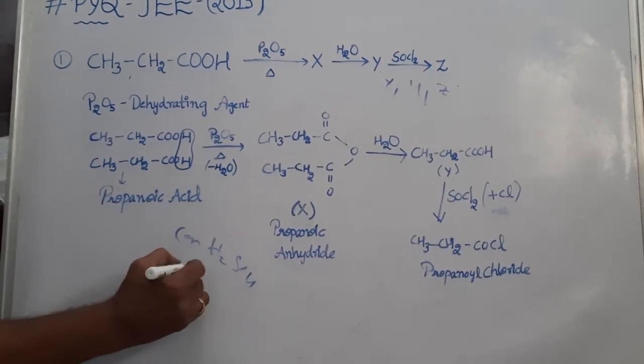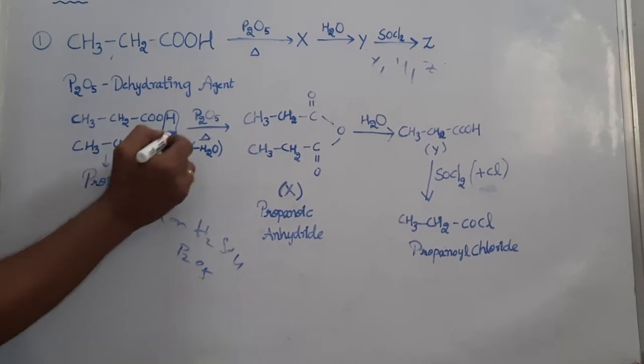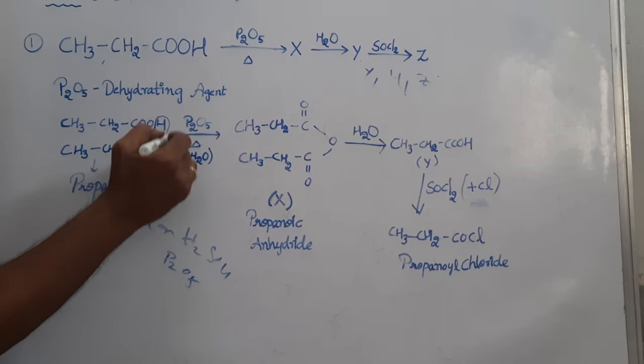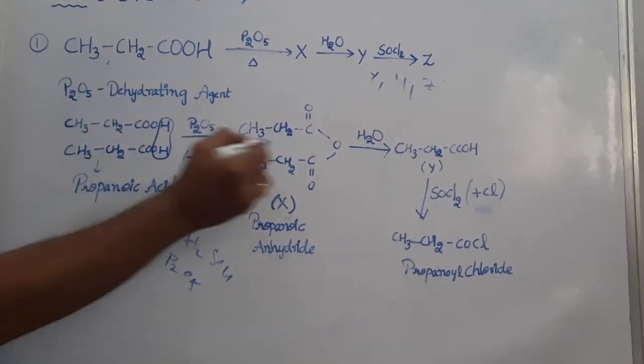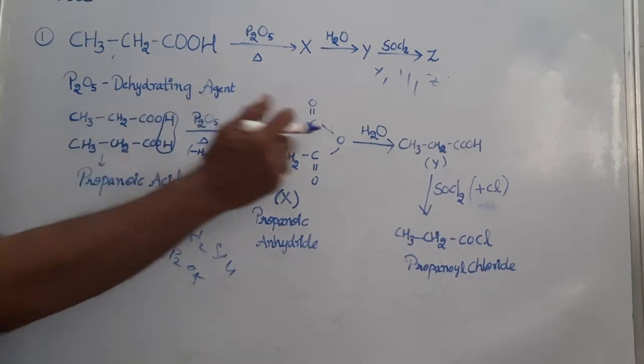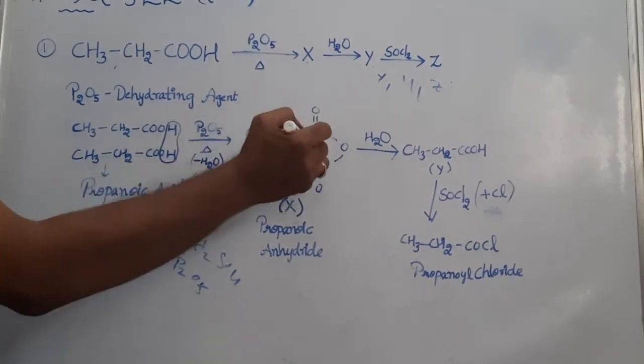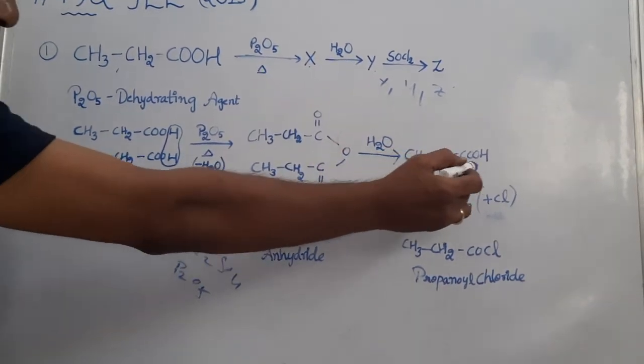Two moles of propionic acid reacts with P2O5 and on further heating loses one water molecule to form propanoic anhydride, that is compound X, which on further hydrolysis forms compound Y, which is propionic acid.